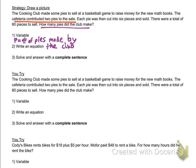Our equation is going to revolve around the 60 pieces. First of all, let me underline the cafeteria contributing two pies, and I'm going to draw two pies for the cafeteria. Next, the cooking club contributed pies, but I don't know how many pies they contributed, so I'm going to draw some pies. I'm going to put dot dot dot and draw another pie.